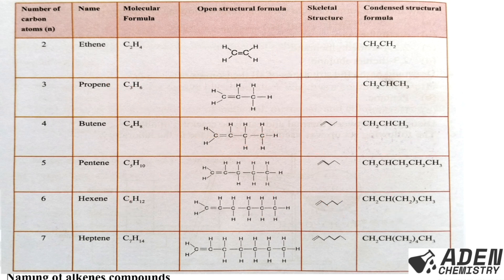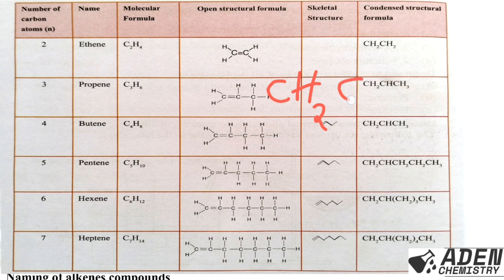Now let's proceed to the condensed structural formula. You can derive it in two ways. The first way is to check from the open structural formula. For ethene, the first carbon has two hydrogen atoms attached and there is a double bond; the second carbon also has two hydrogen atoms attached. So the condensed structural formula for ethene is CH2=CH2.